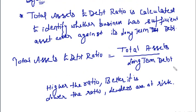This is why we calculate total assets to debt ratio — to identify whether the business has sufficient asset cover against its long-term debt, so that in case of any default by the business, its assets can be applied to recover the debt money. Higher the ratio better it is; lower the ratio, the lenders are at risk. Total assets means non-current assets plus current assets, and long-term debt means long-term borrowings and long-term provisions.